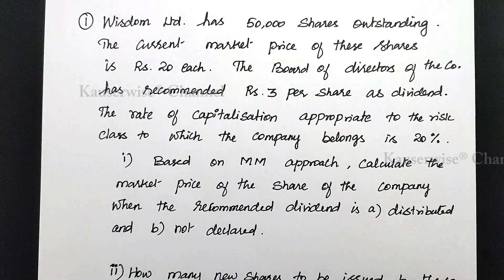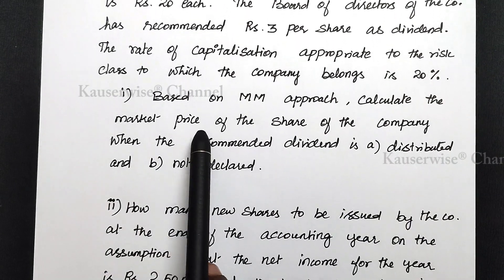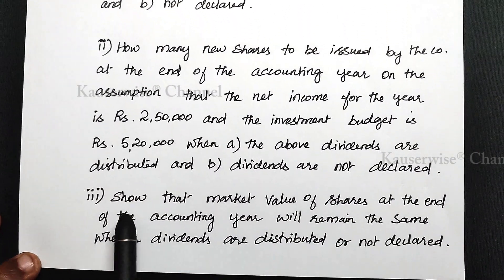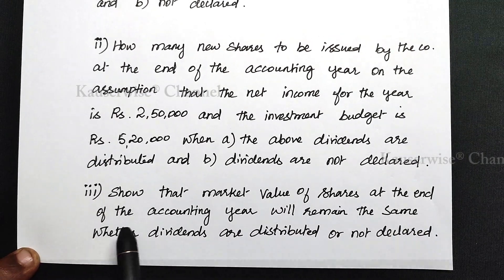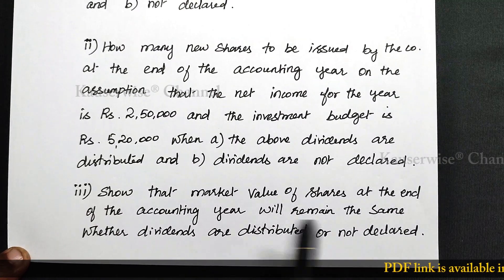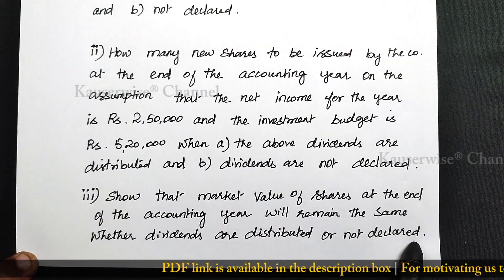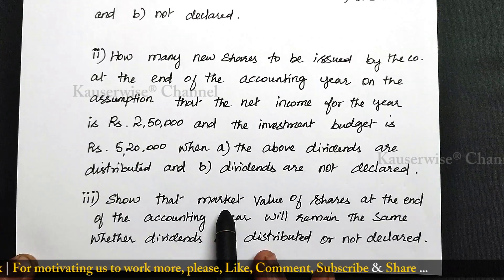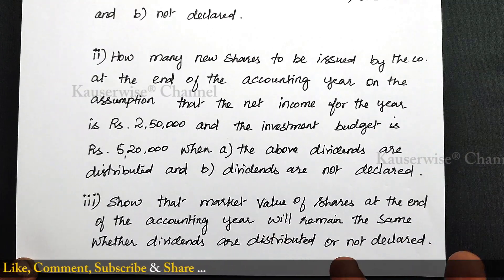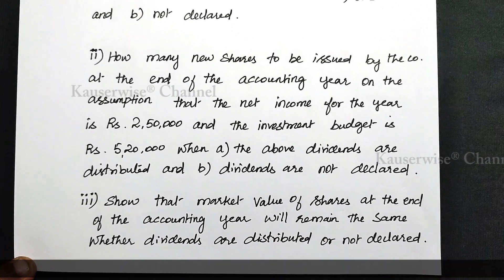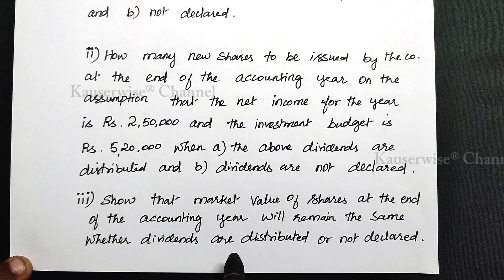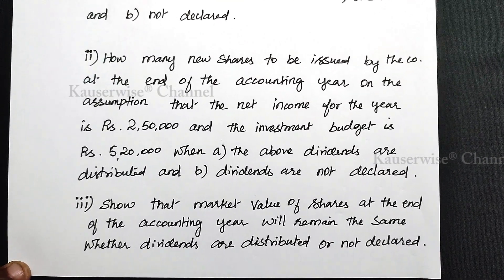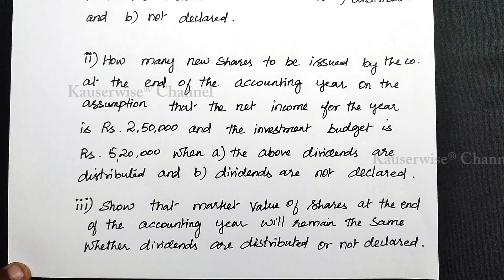So far we have done two calculations: the first is calculation of market price per share, and the second is number of new shares to be issued. The third calculation is to show that the market value of shares at the end of the accounting year will remain the same whether dividends are distributed or not declared. According to the MM approach, whatever may be the dividend decision, the total market value of shares remains the same.